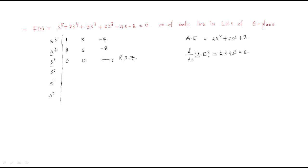Differentiating the auxiliary equation 2s⁴ + 6s² - 8, we get 8s³ + 12s. The constant -8 becomes 0 upon differentiation. So we have 8s³ + 12s. We replace the zero row with coefficients 8 and 12.